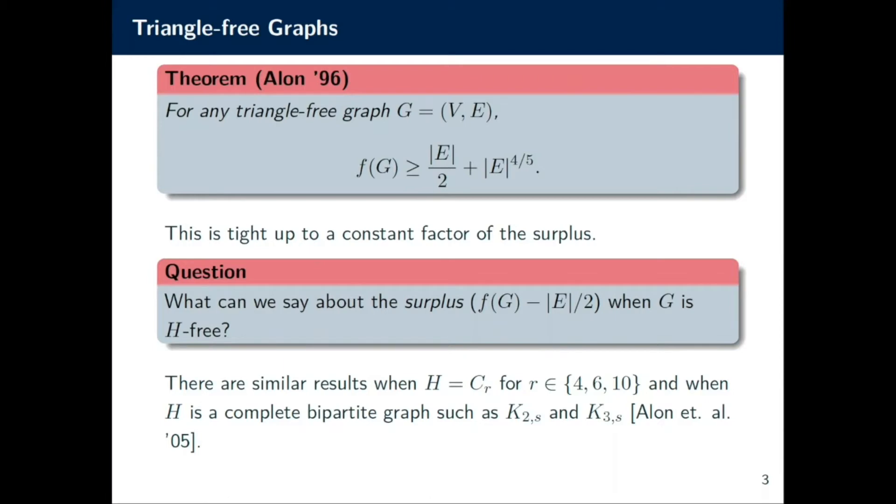It's worth pointing out explicitly that we care about the surplus because we already showed that every graph f(G) is at least |E|/2. So the question naturally asks, how much better can we do than |E|/2?